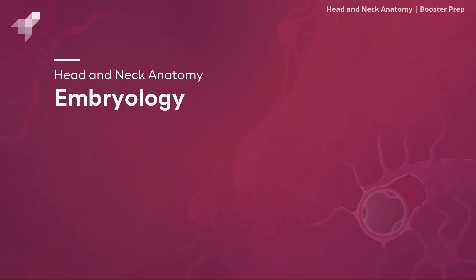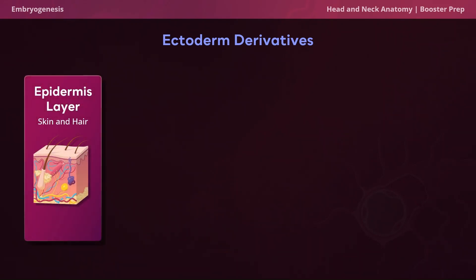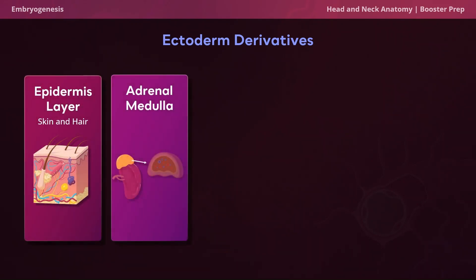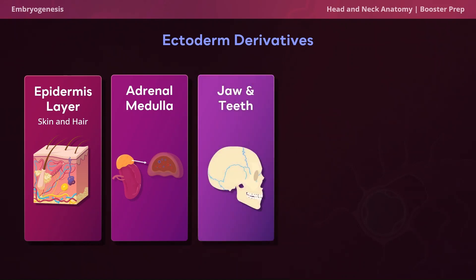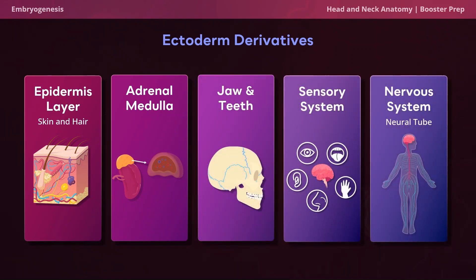There are three primary germ layers of the embryo: the ectoderm, the mesoderm, and the endoderm. The things that derive from the ectoderm are the epidermis layer, the skin and the hair, the adrenal medulla, the jaws and teeth, the sensory system, and the nervous system including the neural tube. A helpful way to remember this list is to think of the ectoderm as the 'attractoderm,' because this list is mostly made up of our external structures like the epidermis layer, our jaws and teeth, and the sensory system.